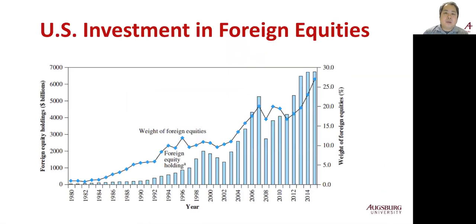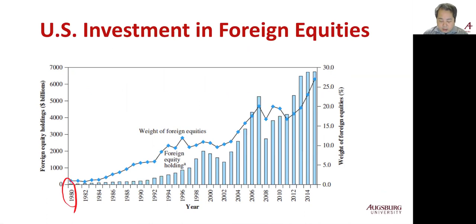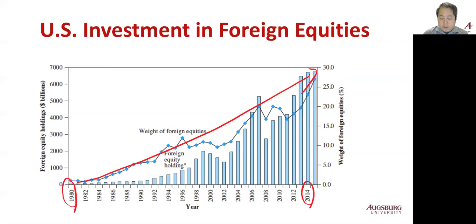This graph shows the surge of U.S. investment in foreign equity. If you look at 1980, it's very, very low. But in 2014, it increased a lot. You can see that both the foreign equity holding and the weight on foreign equities are substantially increased over the last 30 to 40 years. Now let's see why.